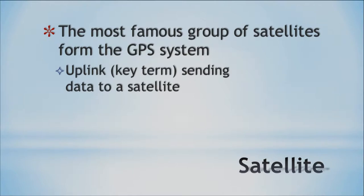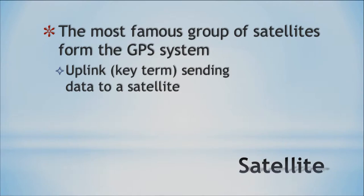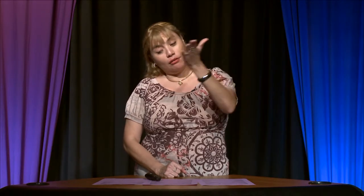Let's look at the components of satellite communications. The first term is uplink — this is when you are sending data from Earth up to a satellite. Then we have downlink — that's when you receive data from the satellite. In the uplink you're sending; in the downlink you are receiving. For every satellite transmission there is an uplink and then a downlink. One device that uses this kind of communication is a satellite phone — kind of expensive, but you can use it anywhere because it grabs your signal, sends it up into space, and sends it back where it belongs.